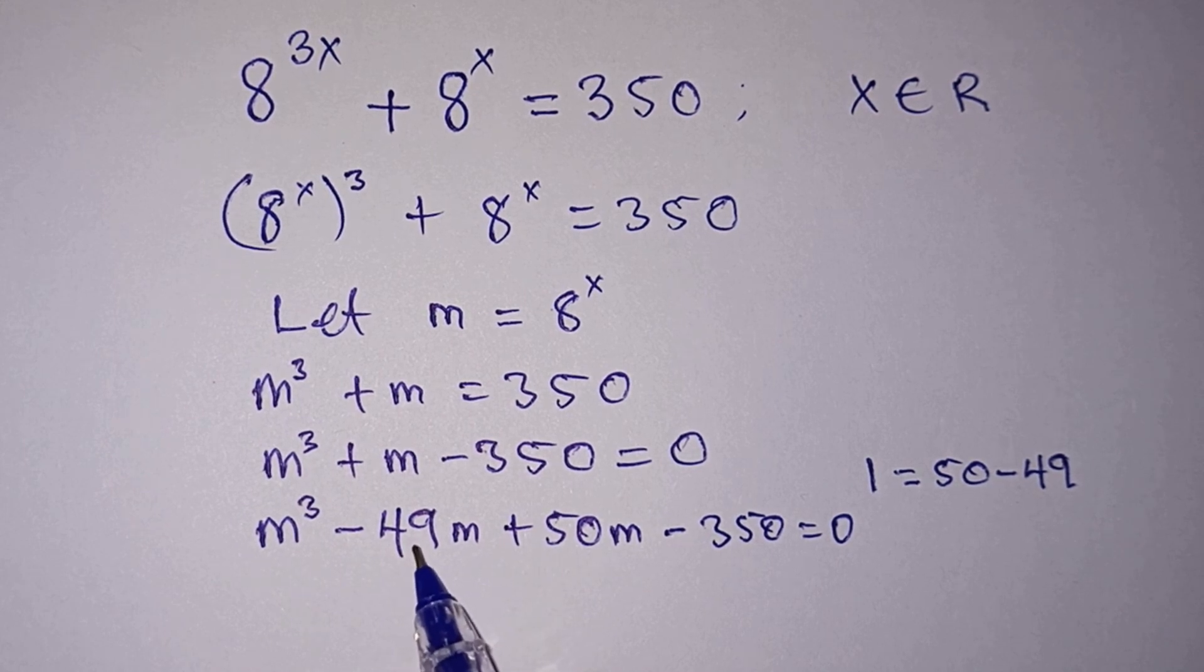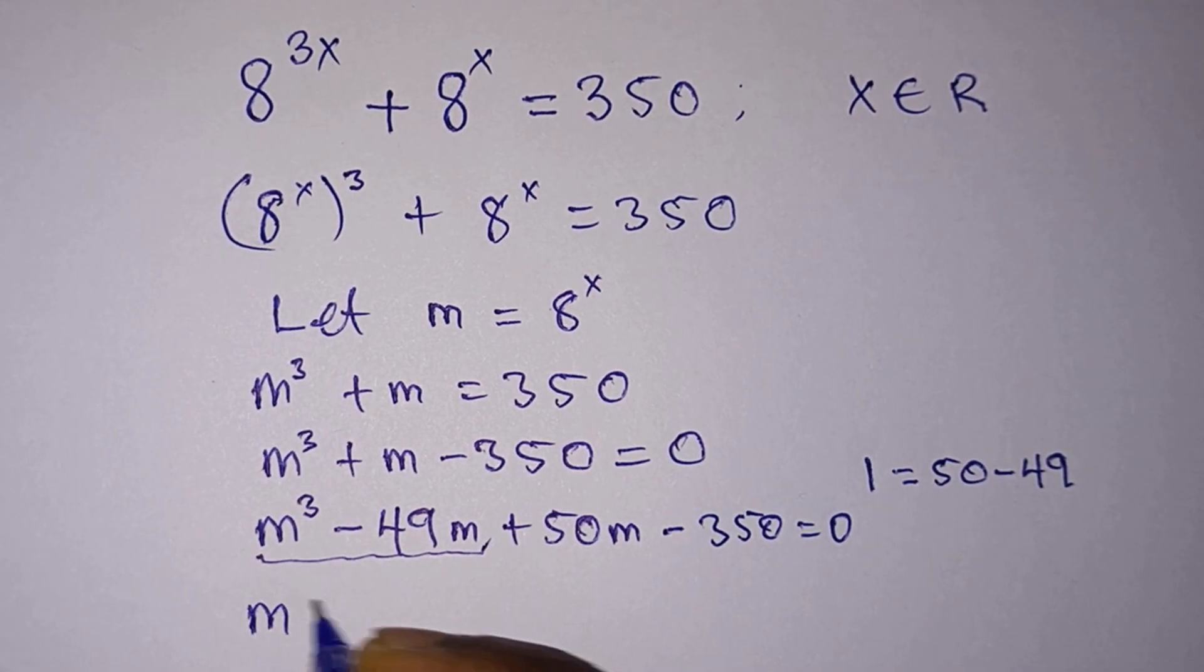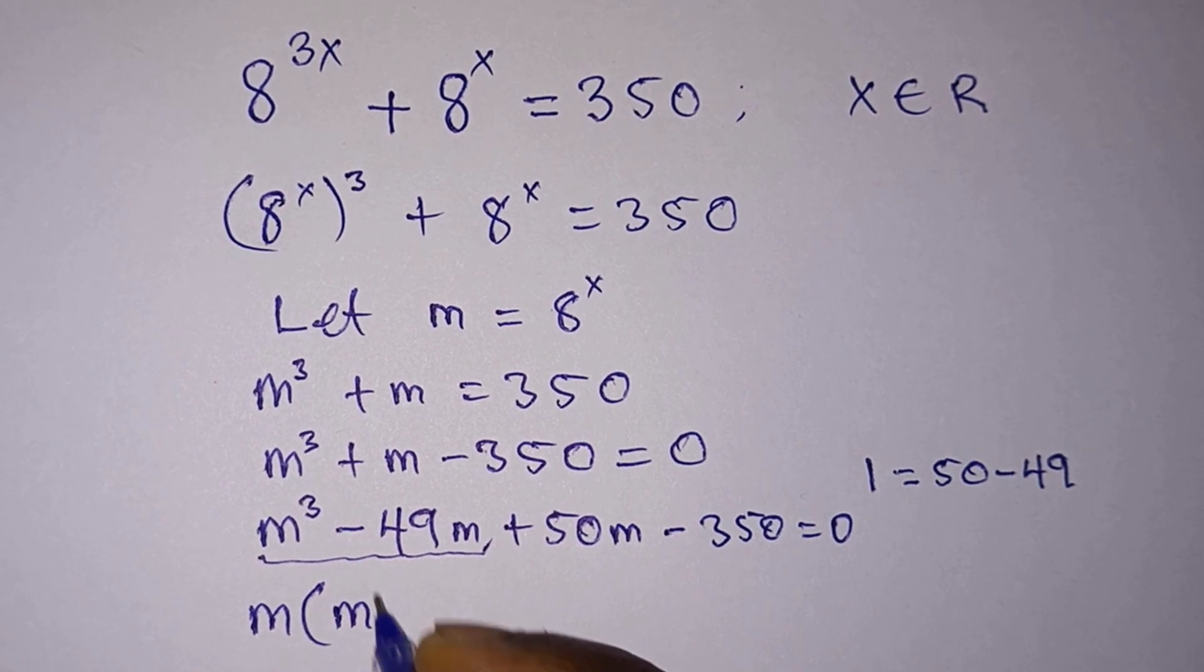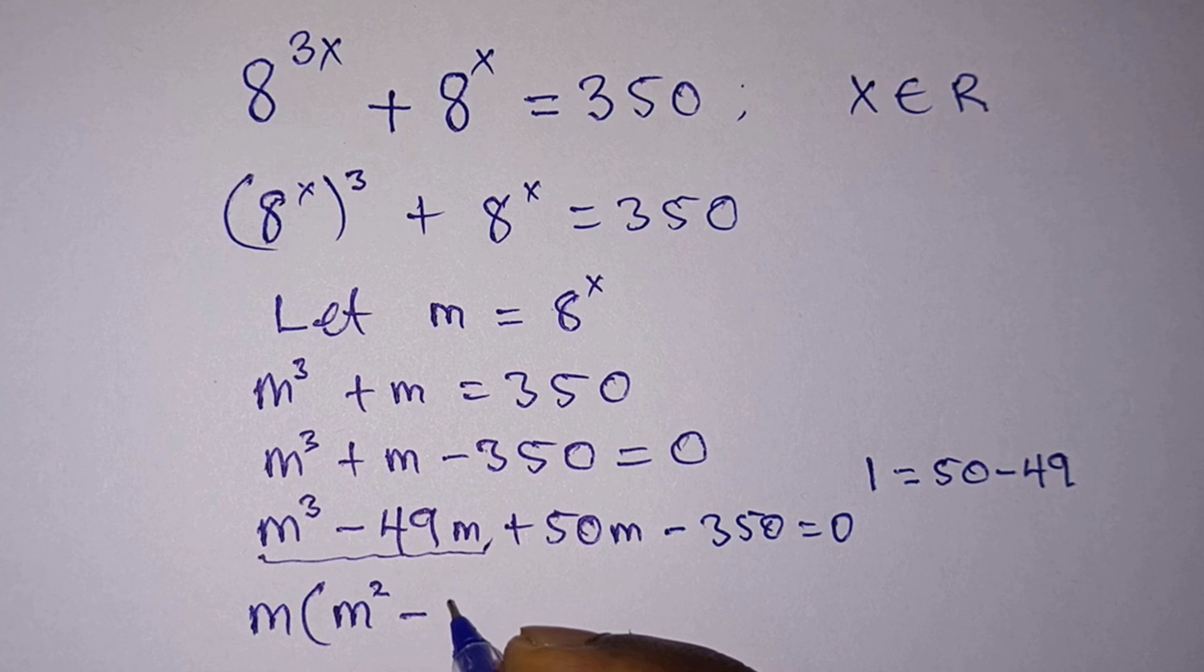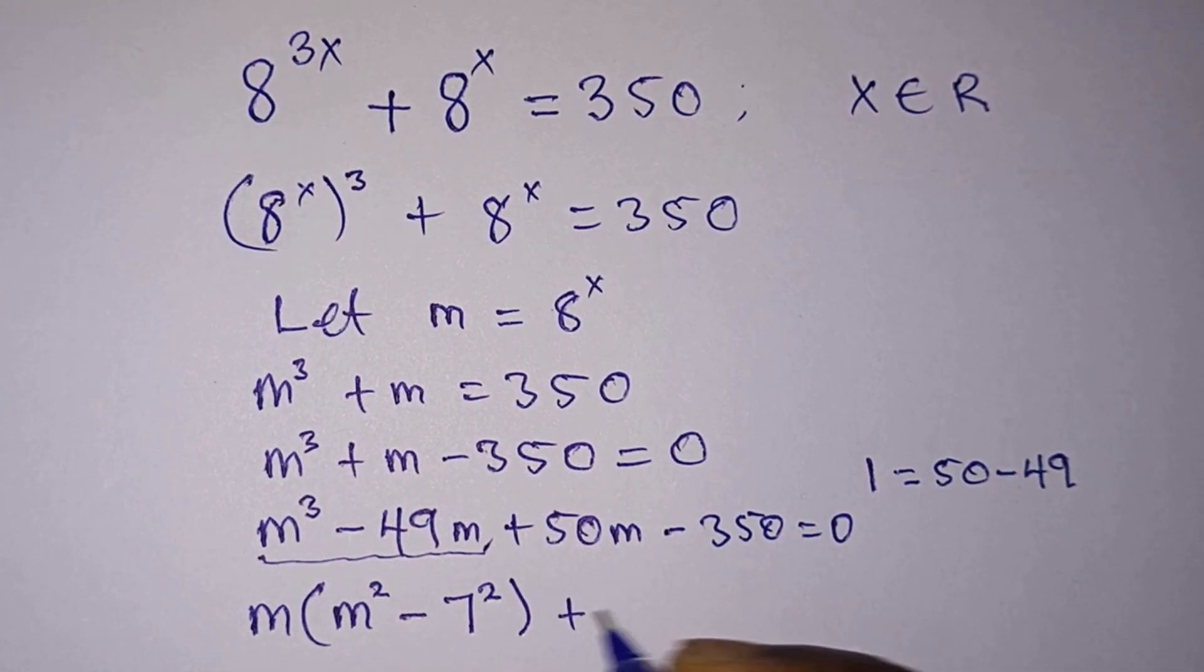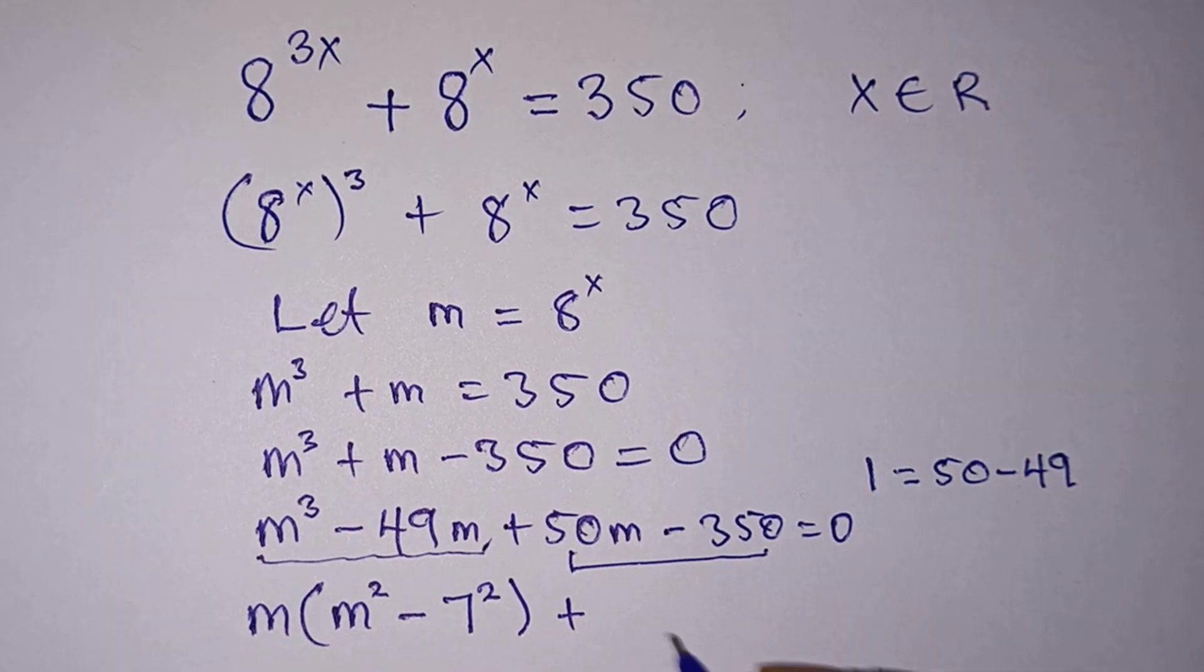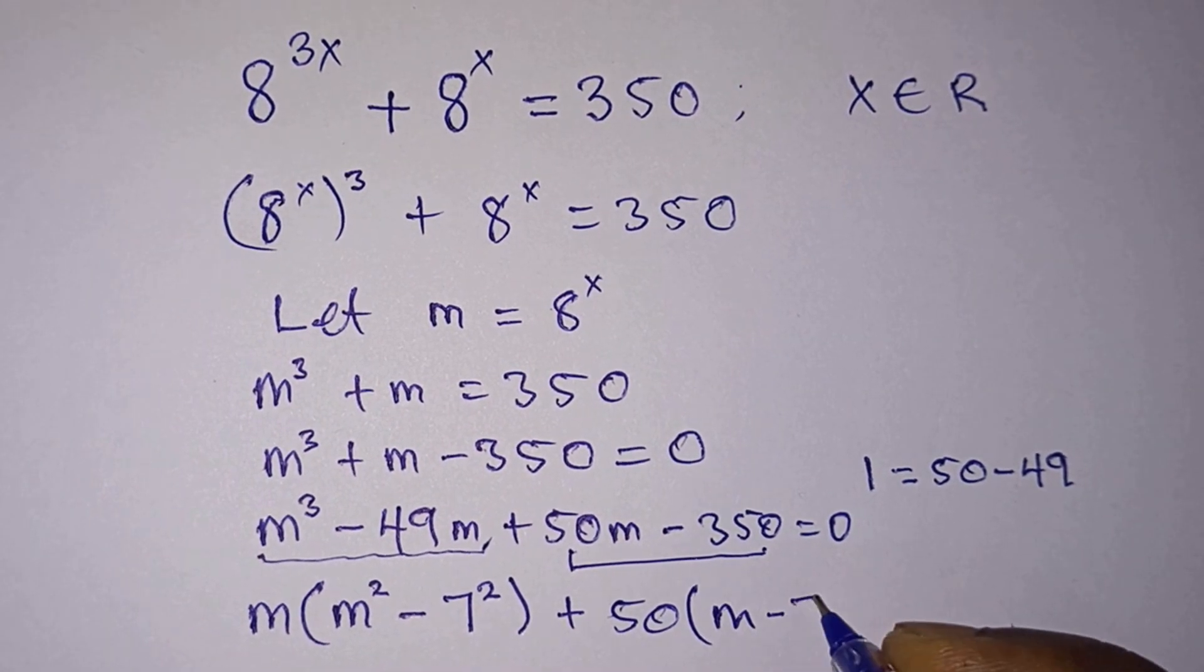Let's pay attention to these two terms. From here we can take m out, so we have m times m squared minus, now this 49 could be written as 7 to the second power, then plus these two terms we can take 50 out, so we have 50 times m minus 7, and this is equal to 0.